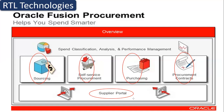Then we have the Supplier Portal. The supplier portal is mainly a tool used to communicate between the supplier and the buyer. We send the purchase order to the supplier, and the supplier can request changes — we call these change orders. The supplier can also send an ASN (Advanced Shipment Notice), goods receipt notes, and communicate with the buyer by sending invoices.